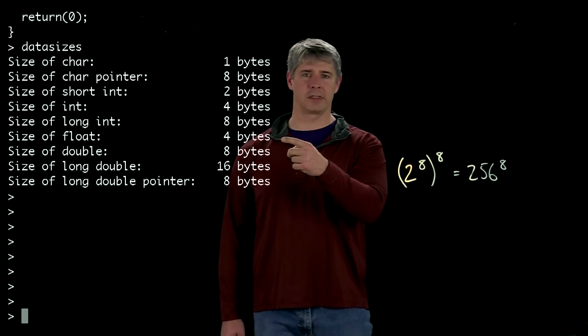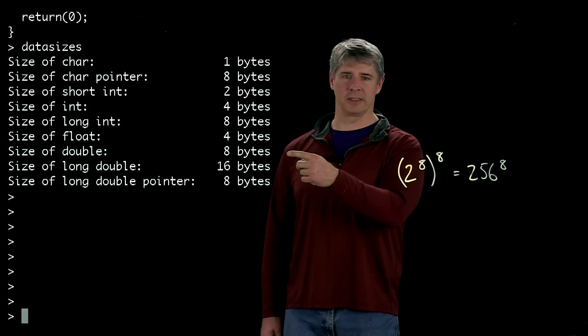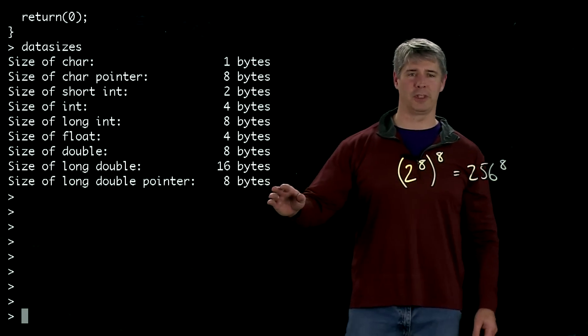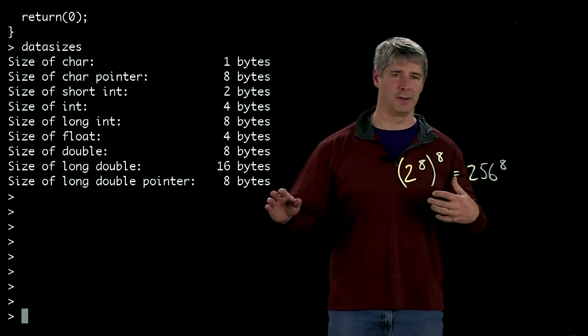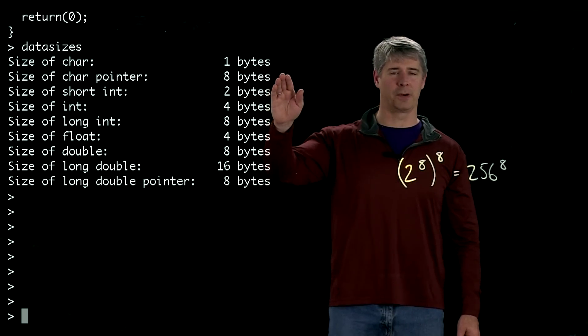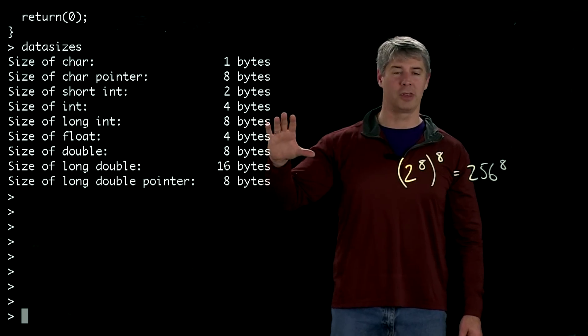A float uses four bytes. A double uses eight bytes, a double precision floating point. And a long double precision floating point uses 16 bytes. And finally, the long double pointer, a pointer to something of long double, also takes eight bytes just as it did for the char pointer because they're both addresses.